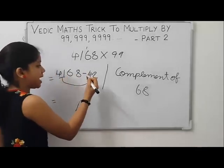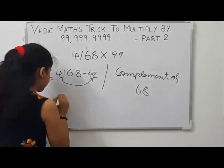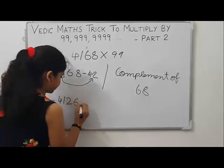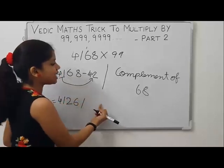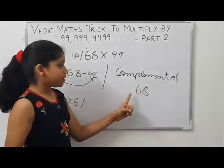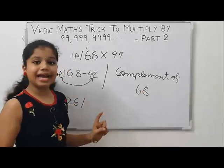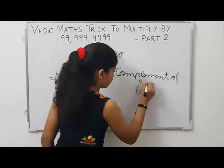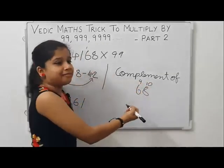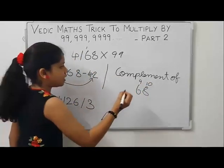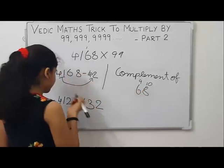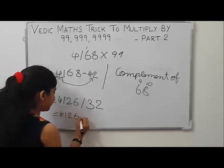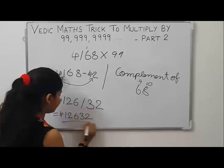Now, 4168 minus 42 is 4126. In the right hand side, find the complement of 68 by applying the rule all digits from 9 and the last digit from 10. Nine minus six is three, ten minus eight is two. So our answer is 412632. This is our answer.